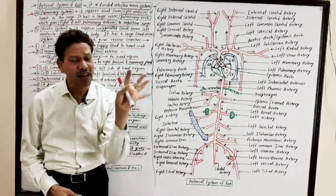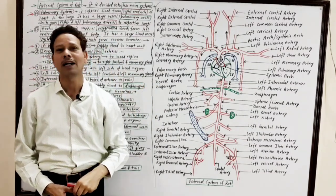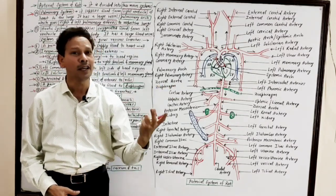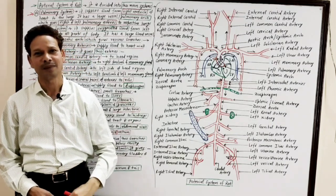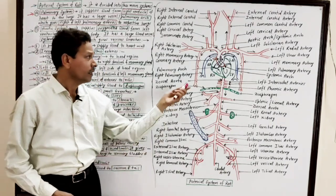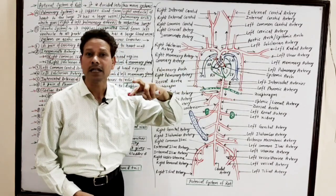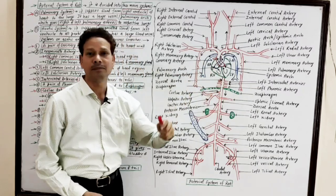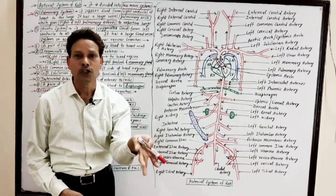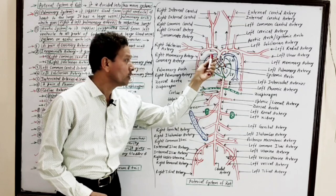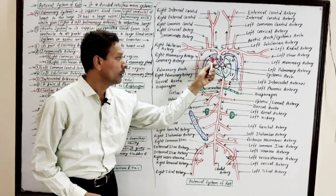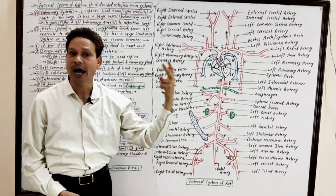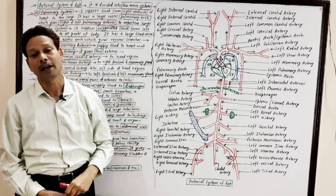Dear students, this entire arterial system is divided into two parts. One is the pulmonary system. Second is the systemic body or aortic system. In the pulmonary system, a large blood vessel — the pulmonary arc — arises from the right ventricle to carry deoxygenated blood to the lungs through a pair of arteries: the right and left pulmonary arteries.